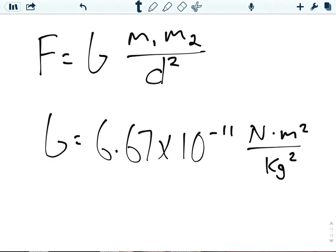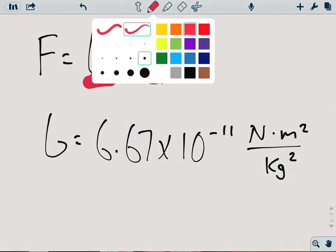Now, it wasn't until later that we got this value right here, G, which is our universal gravitational constant.